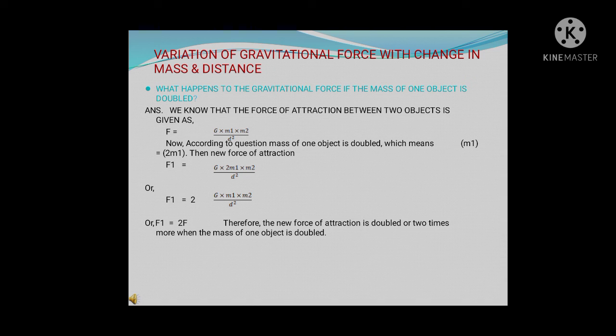We will write the answer like this. We know that the force of attraction between two objects is given as F = G·m1·m2 / d². Now according to the question, mass of one object is doubled, which means m1 becomes 2m1, because the question says the mass of one object is doubled.